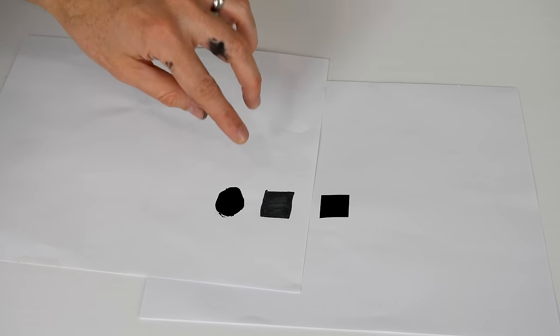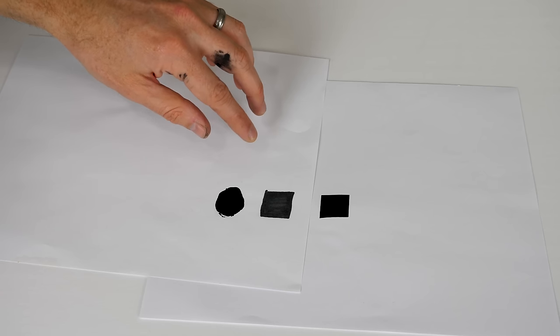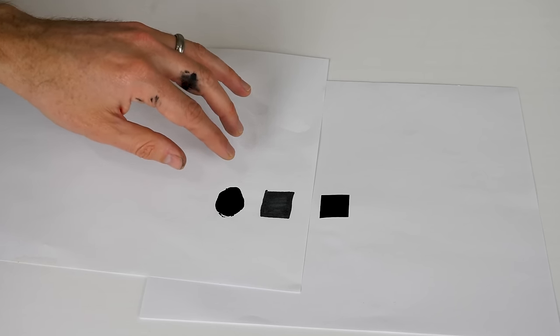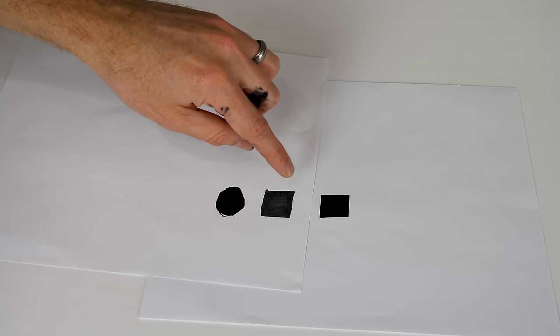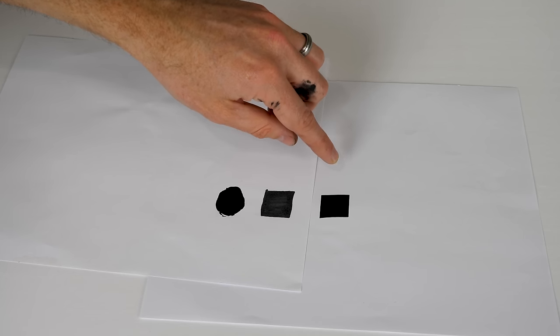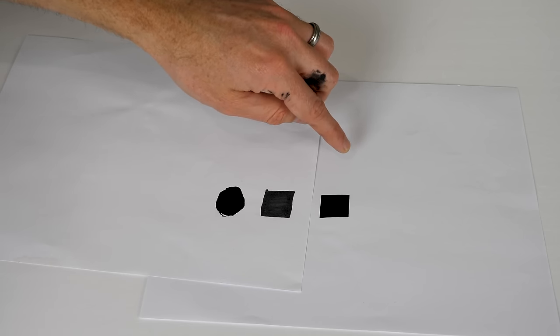Black 2.0 is the blackest paint available on the market and I've done some experiments with this before. It absorbs around 96% of light. This black Sharpie marker, not so sure how much this absorbs, but my black here should absorb more than 99.96% of light.